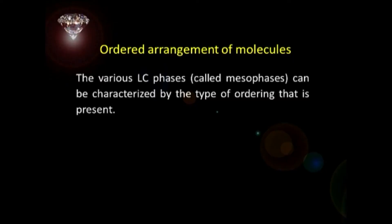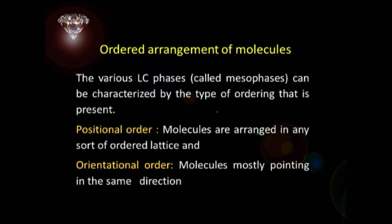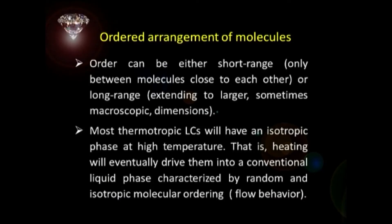It is the ordered arrangement of molecules that is the clue to liquid crystalline behavior. The various LC phases can be characterized by the type of ordering present in them: positional order — molecules arranged in an ordered lattice — and orientational order — molecules mostly pointing in the same direction. Order can be either short range, only between molecules close to each other, or long range, which can extend to larger, sometimes macroscopic dimensions. Most thermotropic liquid crystals will have an isotropic phase at high temperature — heating will drive them into a conventional liquid phase characterized by random and isotropic molecular ordering.